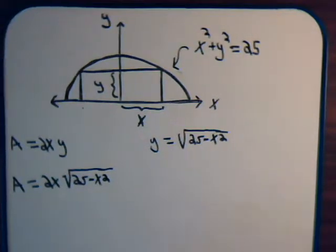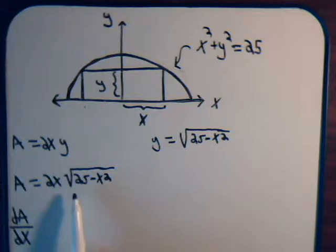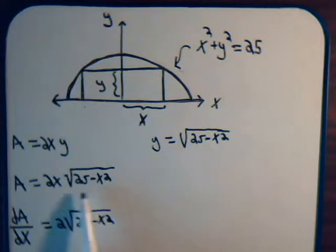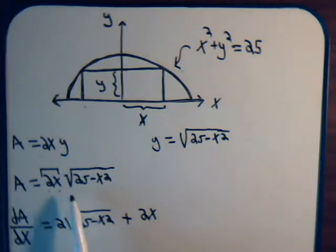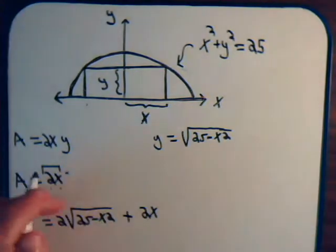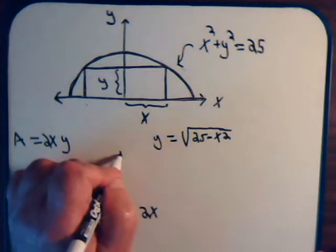Now we can take the derivative of the area with respect to x to determine the critical points by setting it equal to 0. We will have the square root of 25 minus x squared times the derivative of 2x with respect to x, which is just 2, plus 2x times the derivative of the square root of 25 minus x squared. Let's write this in exponent form: 25 minus x squared to the 1/2 power.